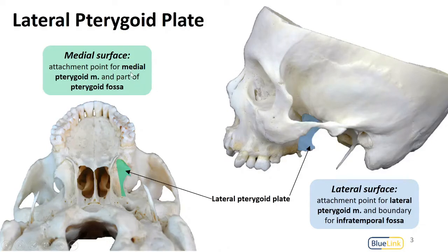The medial surface of the lateral pterygoid plate, shown here in green, is the attachment for the medial pterygoid muscle. It's also part of the pterygoid fossa, which is the indentation we see between the lateral pterygoid plate and the medial pterygoid plate.